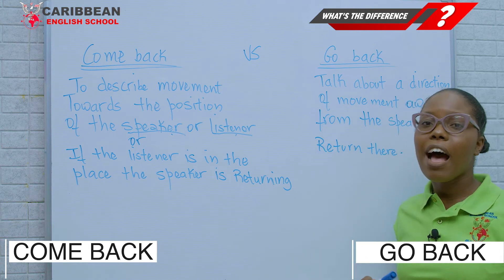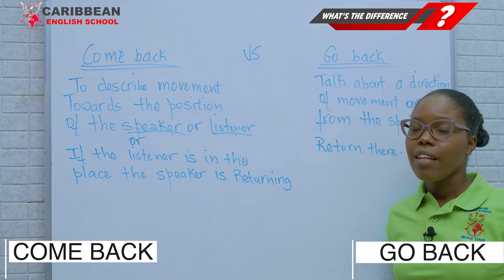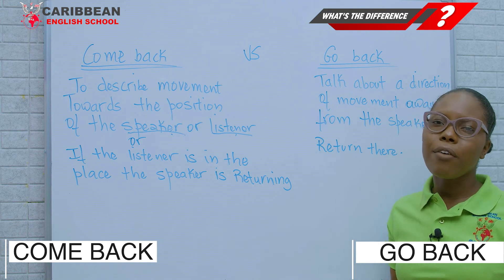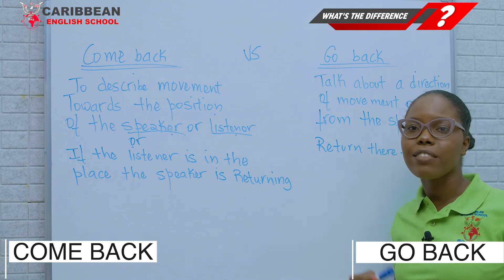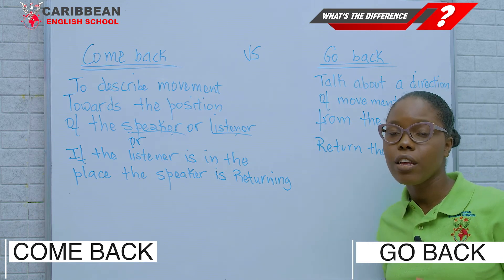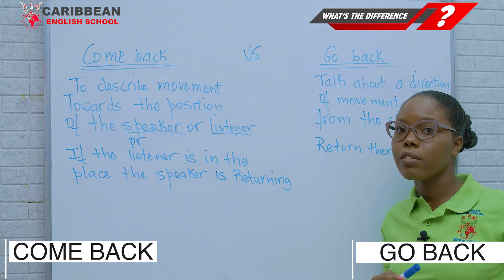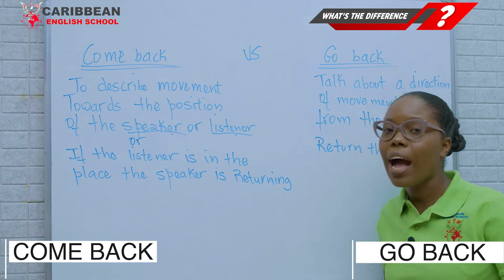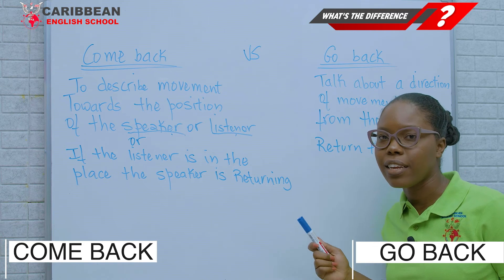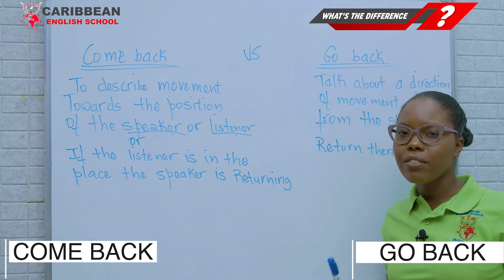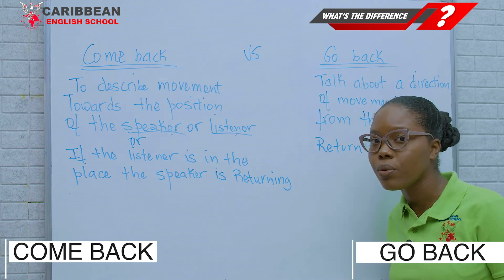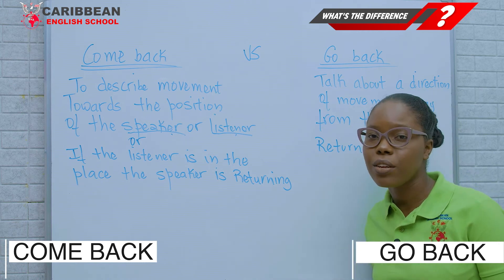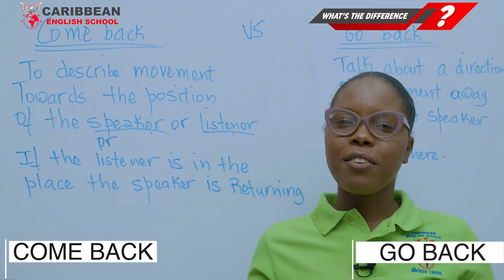Let's take another example. Imagine I'm having a conversation with a friend and I'm in Haiti with them. I'm telling my friend that I have to go back to the United States. The first reason is because I was in the United States already, now I'm in Haiti, so I have to return there. The best term to use is 'go back' — I have to go back to the United States.